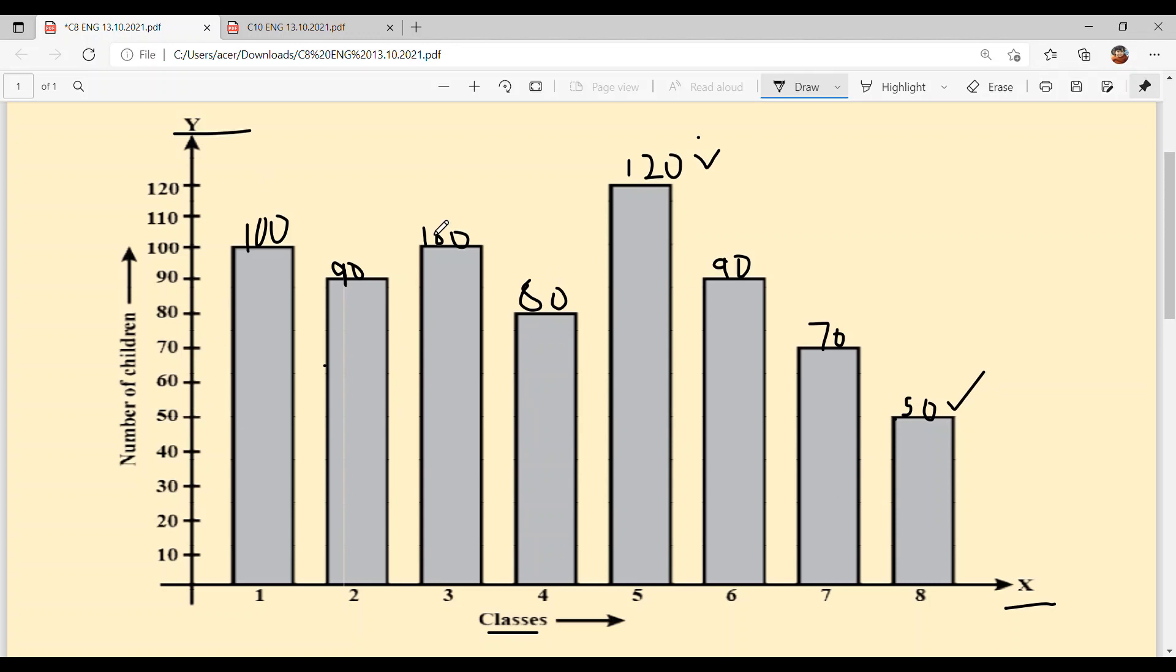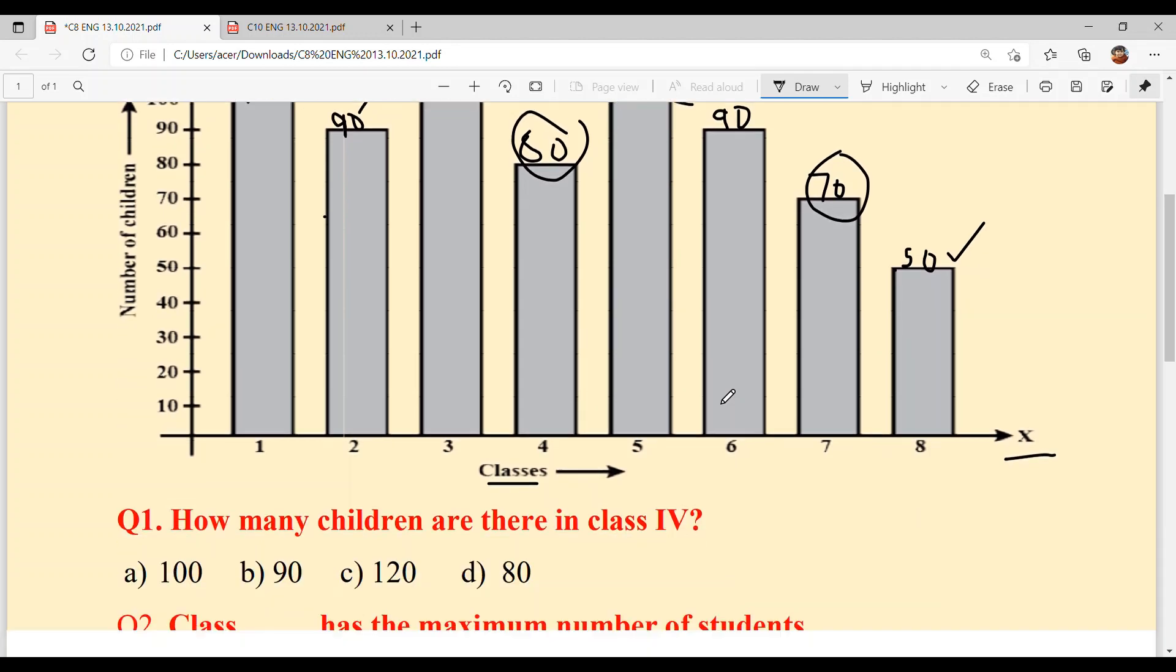Class first and third have the same number of kids, so do class second and sixth. Class fourth has 80 and class seventh has 70. Easy, not difficult, simple bar graph. Now let's answer the questions.